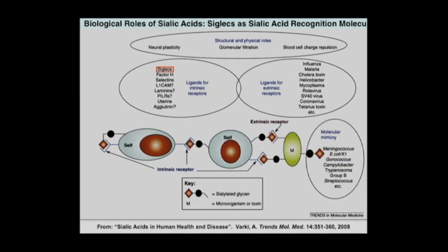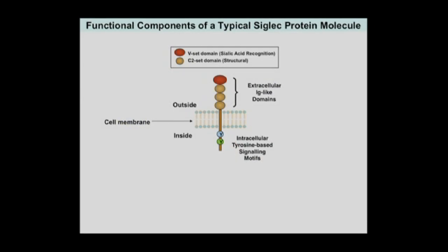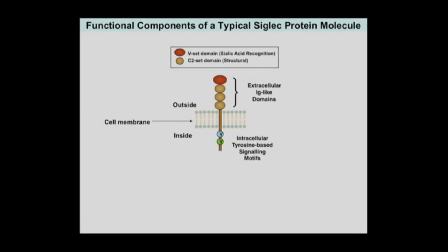Now I want to come back to the other aspect, which is siglecs — the main theme here. These are proteins that recognize sialic acid either on the same cell surface or adjacent cell surfaces. Here is a generic siglec molecule: the outside of the cell, the cell membrane, extracellular IG-like domains, intracellular signaling motifs, and here's where you recognize sialic acids.